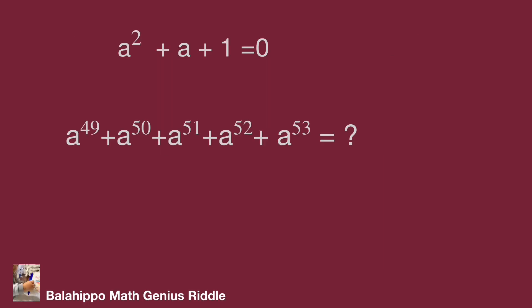The given equation is a squared plus a plus one equal to zero. Then we have to find the value for a power of 49 plus a power of 50 plus a power of 51 plus a power of 52 plus a power of 53.